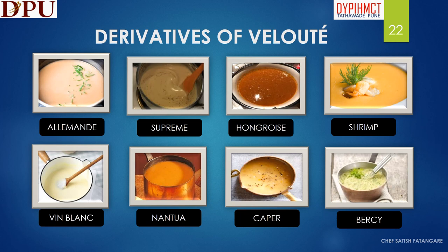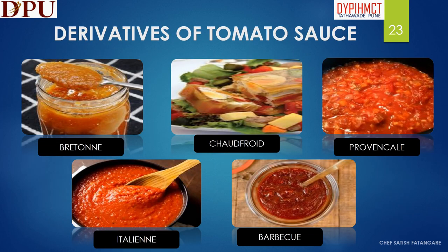In this slide we will learn about the derivatives of velouté sauce. The derivatives of velouté sauce are Allemande, Suprême, Hongroise, Shrimp, Vin Blanc, Nantua and Caper sauce.